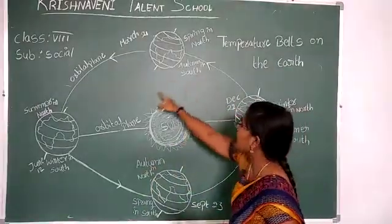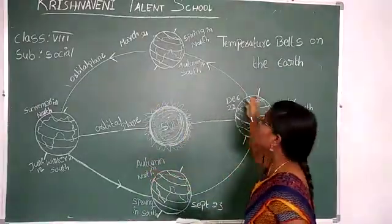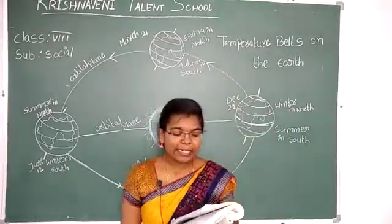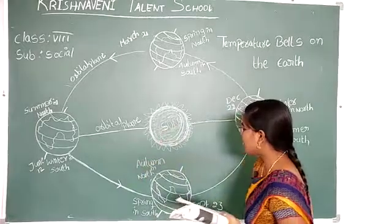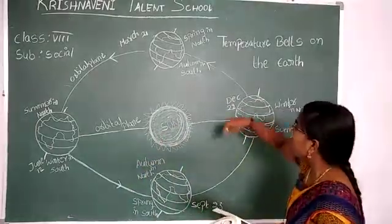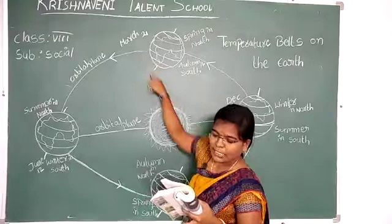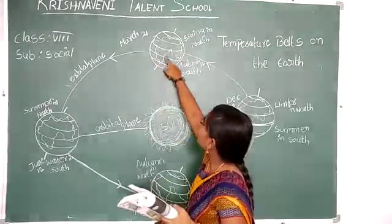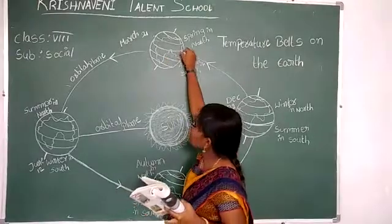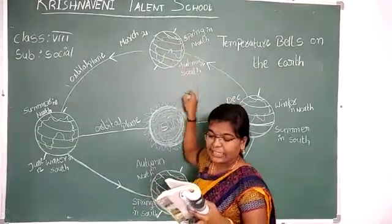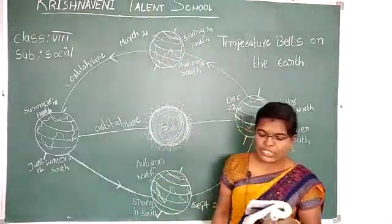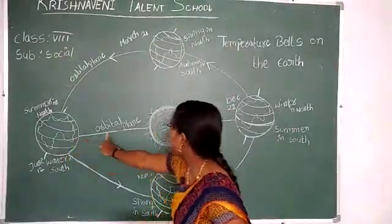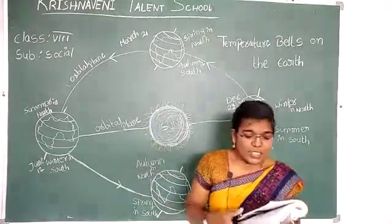The sun faces the earth directly, and this changes throughout the year. In March, the sun shines directly over the equator. In June, it shines directly over the Tropic of Cancer in the northern hemisphere.